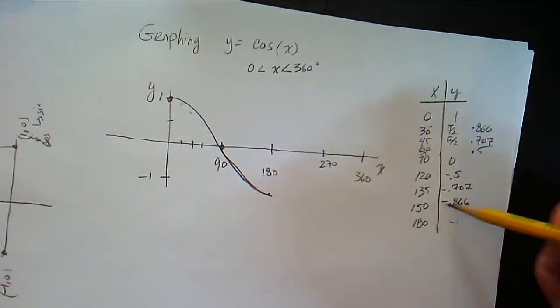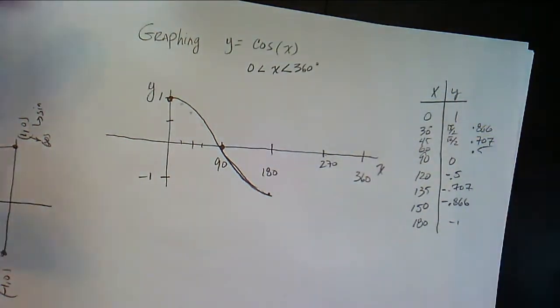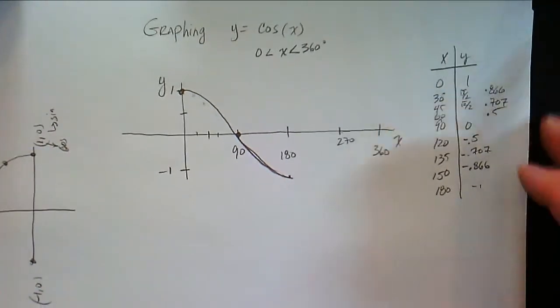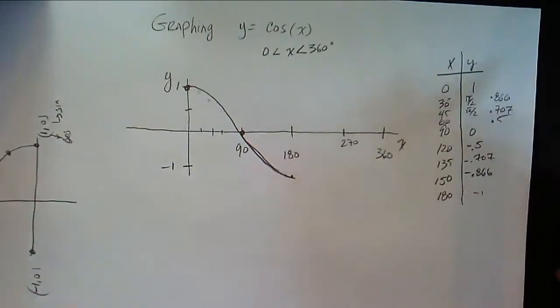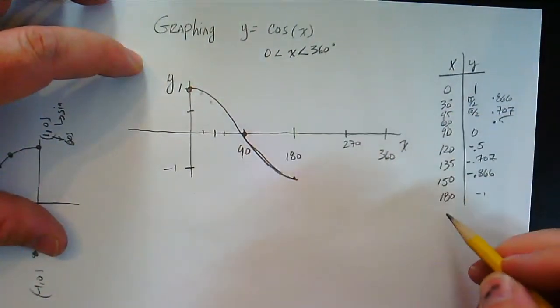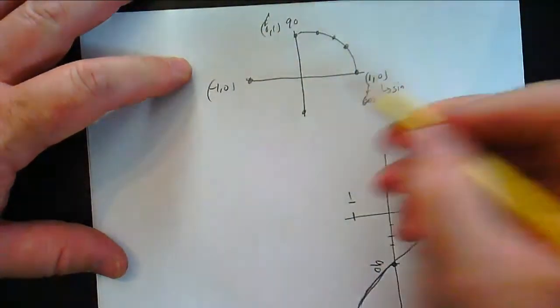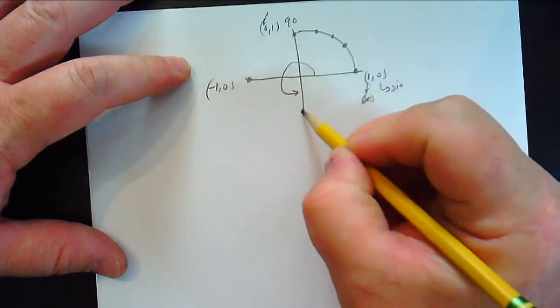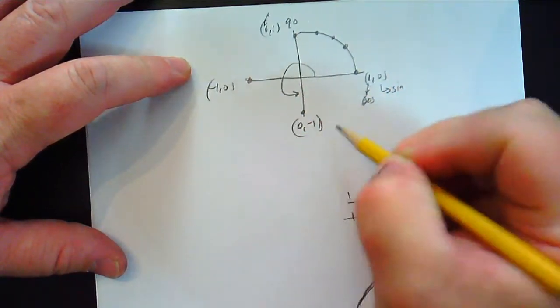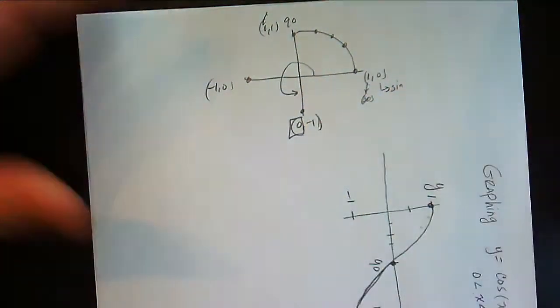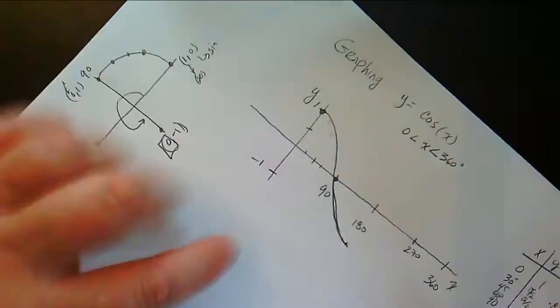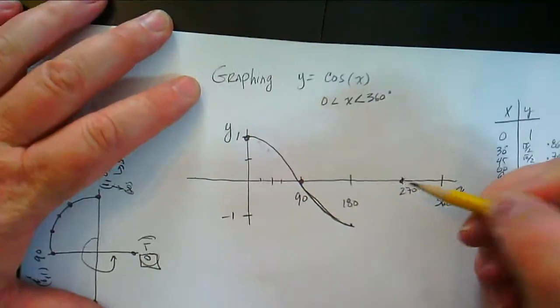So when you plug cosine of 150 degrees into a calculator, or if you just remember how it works, you use a unit circle for your reference, that's the output. And so if we continue this all the way around, like let's say we're here in our unit circle, this is 270 degrees right here, and the coordinate here is 0, negative 1. So the cosine of 270 degrees is 0, you see? So we have another x-intercept right there.